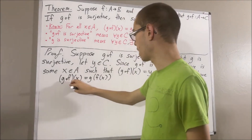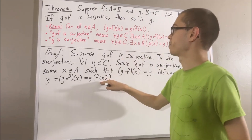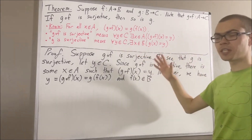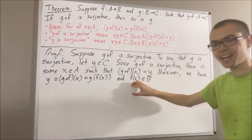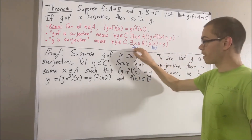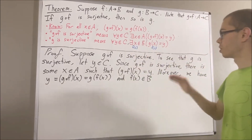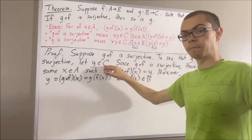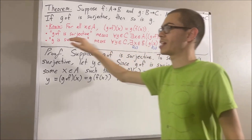We know that g compose f of x is equal to y, and also since f of x is an output of the function f, that means f of x must be an element of B. So we have shown that this statement is true — we have found at least one element in B that makes it true, namely f of x. That is, f of x is an element of B and g of f of x is equal to y. Since y was arbitrary, we have shown for all y in C this is true, which means we have proven that g is surjective.